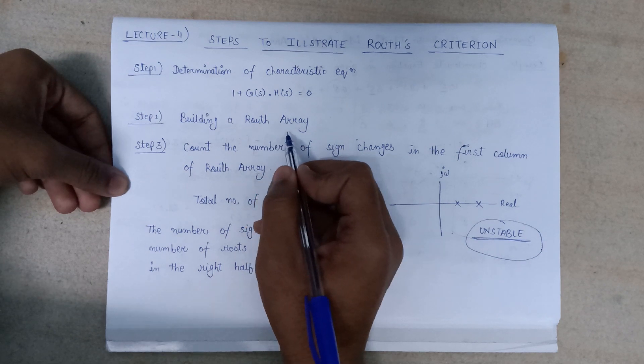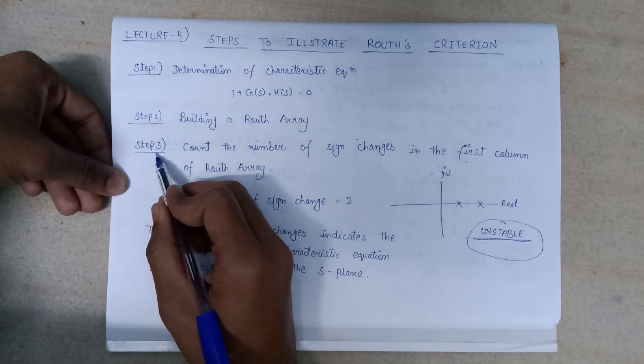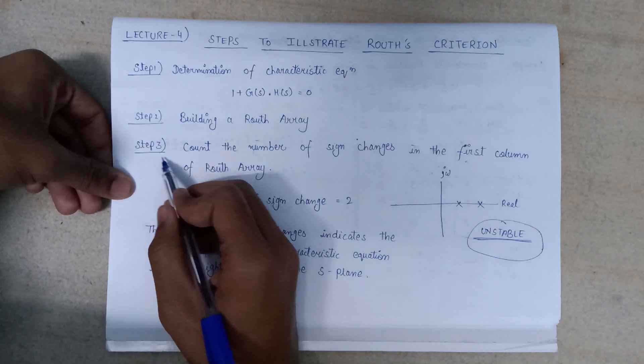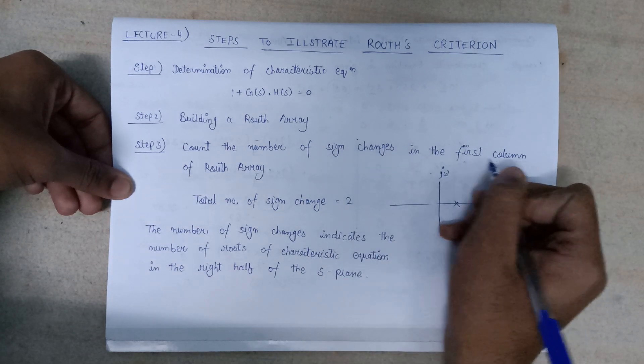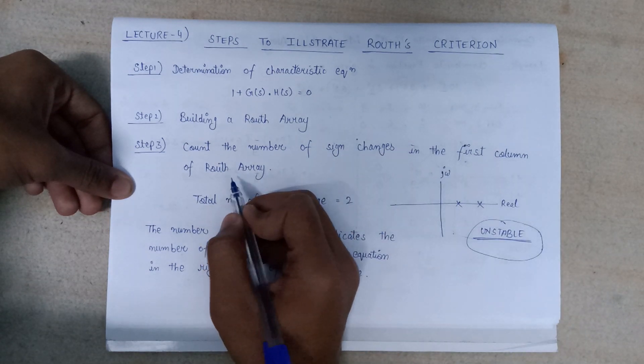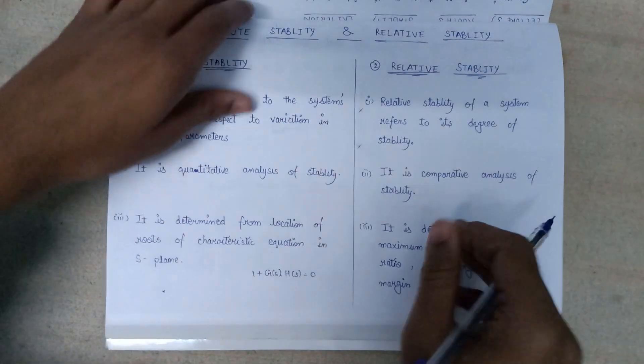After the successful completion and formation of the Routh array, we will move to step 3. In step 3, we need to count the number of sign changes in the first column of the Routh array. Let's move to the previous example that we did.